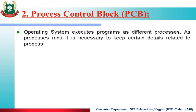Next is Process Control Block (PCB). The operating system executes programs as different processes. As processes run, it is necessary to keep certain details related to each process. If the operating system is generating a number of processes, it is necessary to maintain data and information about each process properly. So the operating system generates one PCB for each process. For example, if there are 10 processes in the computer system, there will be 10 PCBs. Process P1 has PCB1, process P2 has PCB2. All information related to process 1 is maintained by PCB1, and all information of process 2 is maintained by PCB2.